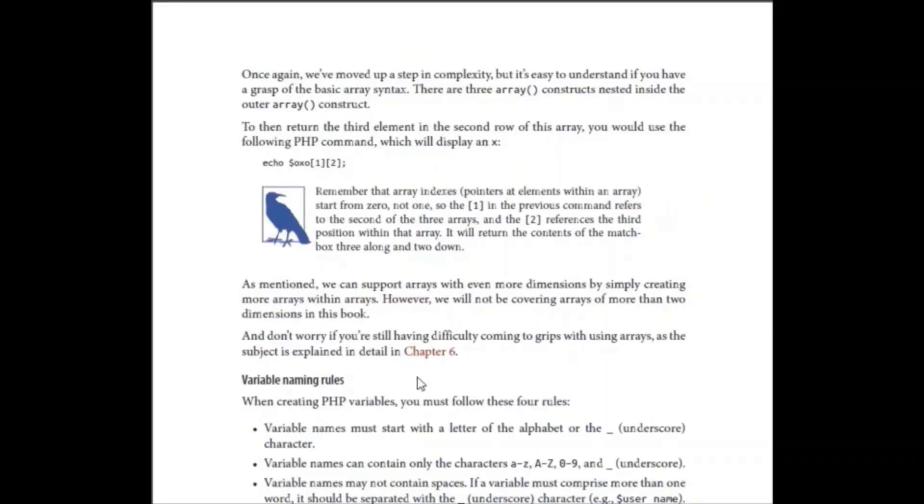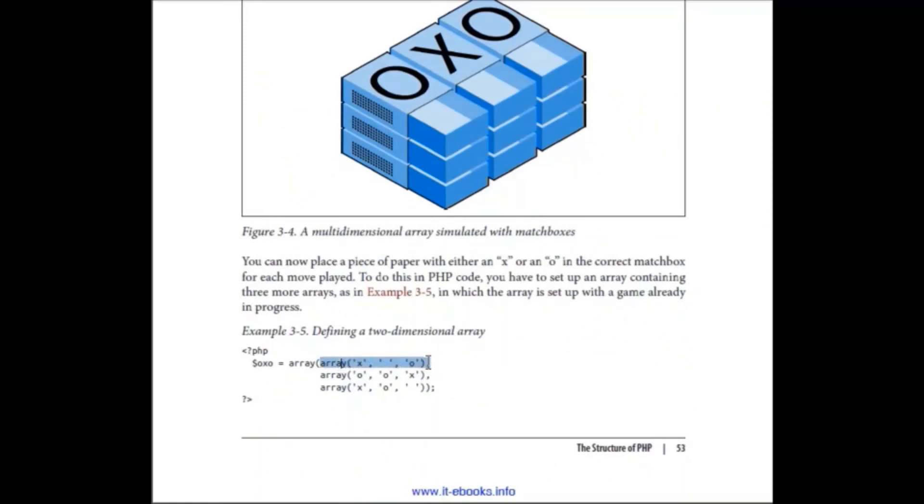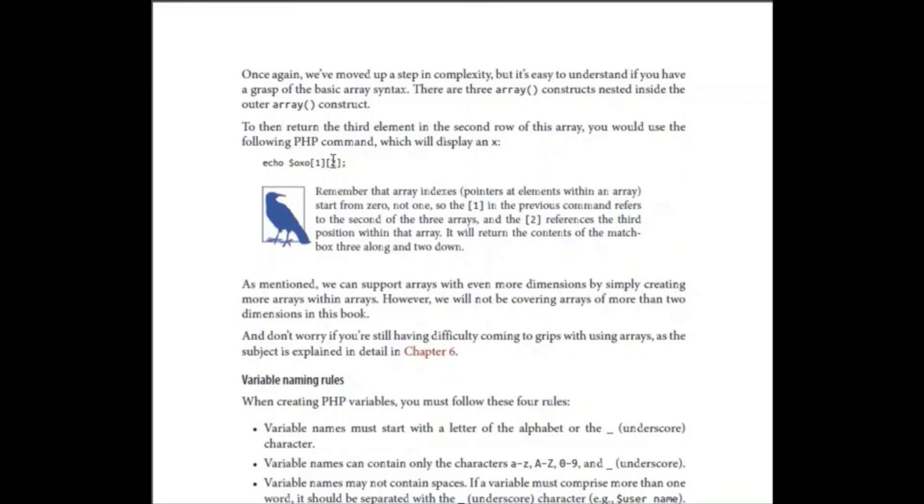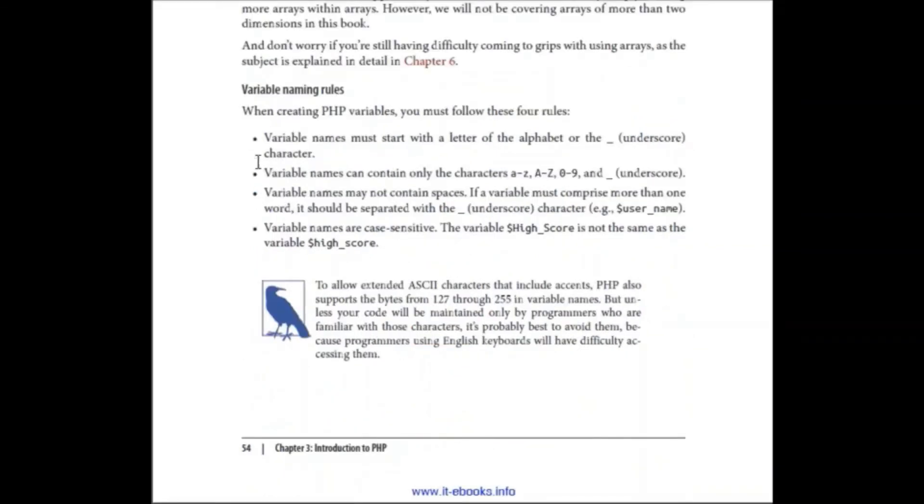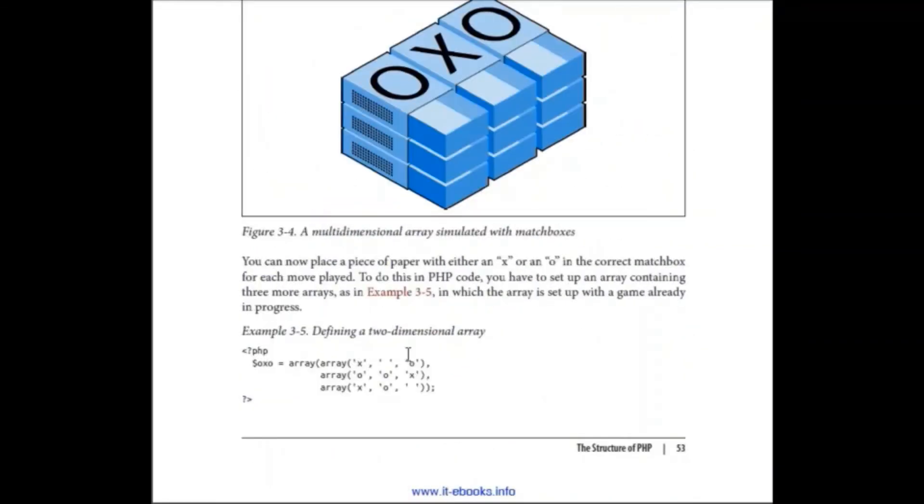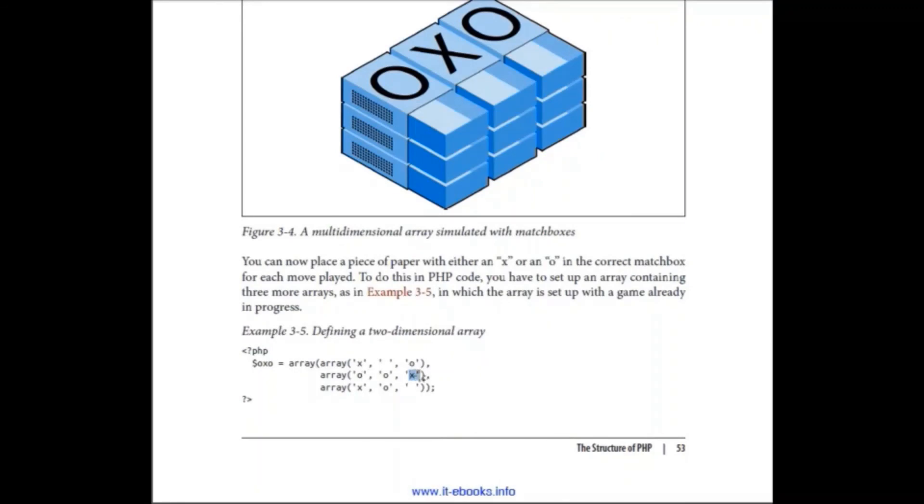You can already see the output. See, which will display an X. Why? Because first it will select the row. First row, so it starts with zero. So this is the zero-th row and this is the first row. Then two means column, so the second column, the second row and third column, X.